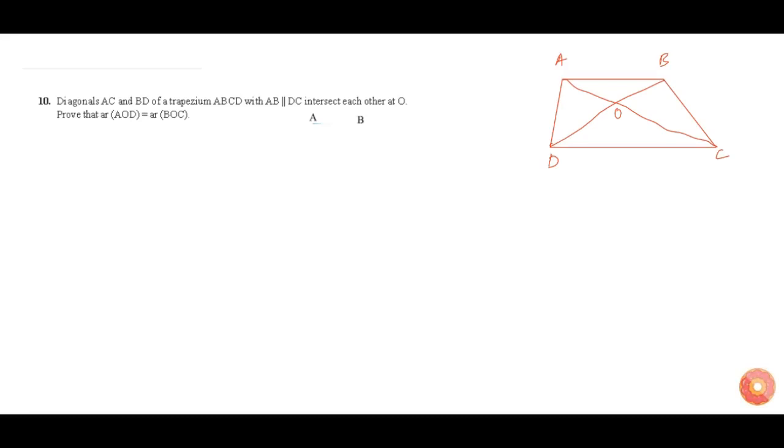Let us see what is given in the question. Diagonal AC - this is the diagonal AC and this is diagonal BD of the trapezium ABCD, with AB parallel to CD, and these diagonals intersect at O.